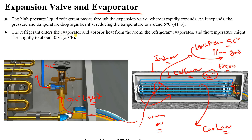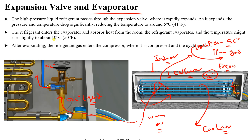The refrigerant enters the evaporator, absorbs heat from the room, evaporates, and its temperature increases — for example to around 10°C. Note that these temperature values vary between different refrigerants and manufacturers; they are not fixed standard values. After evaporating, the refrigerant gas returns through a valve back to the compressor, where it is compressed again and the cycle repeats. This is how an air conditioning system and refrigerator work — this principle is used in almost every appliance that uses a cooling mechanism.